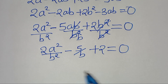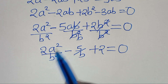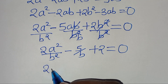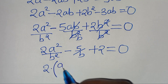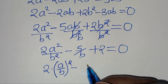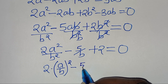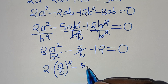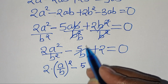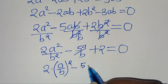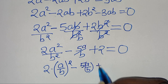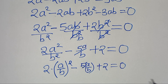Dividing by b squared, we simplify b squared, so we remain with 2a squared over b squared minus 5a over b plus 2, equal to 0. We can express a squared over b squared as 2 times (a over b) raised to the power of 2, minus 5 times (a over b) plus 2, equal to 0.